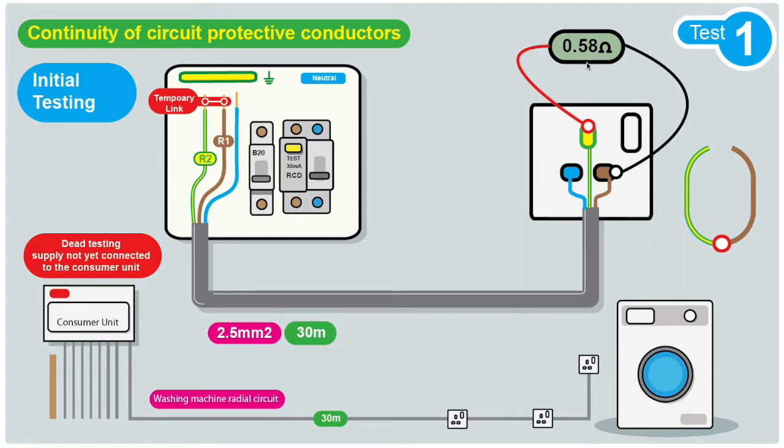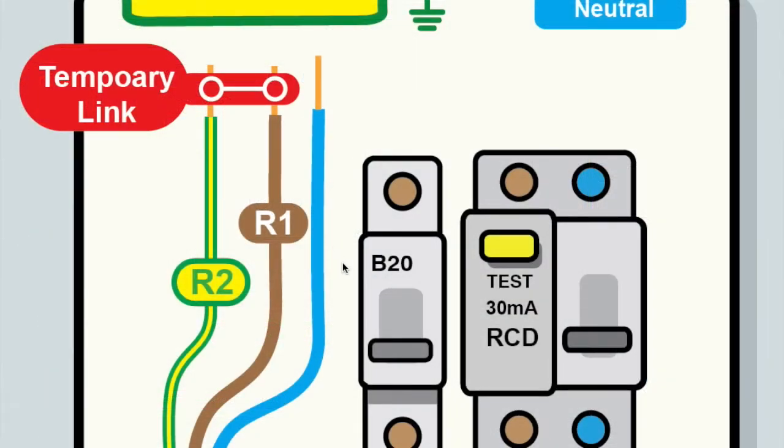We need to work out if that reading of 0.58 ohms is acceptable. It's shown that we've got continuity but it's only a number. We need to work out if that's an acceptable number. This is inside the consumer unit.